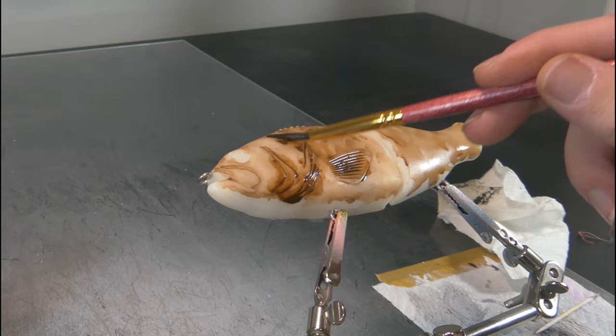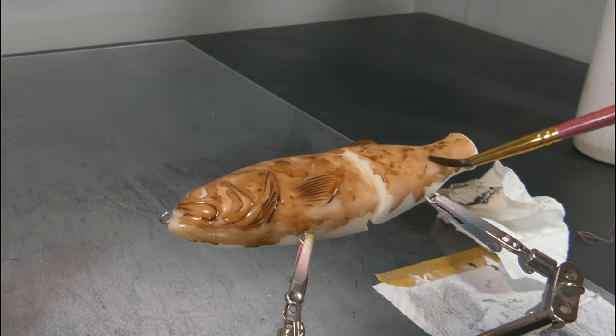Alright guys, so to start with I am applying a dark brown wash from Vallejo and that's just to create that darkish undercoat. It's to create a little bit of texture underneath the other layers that we're going to put on later on.